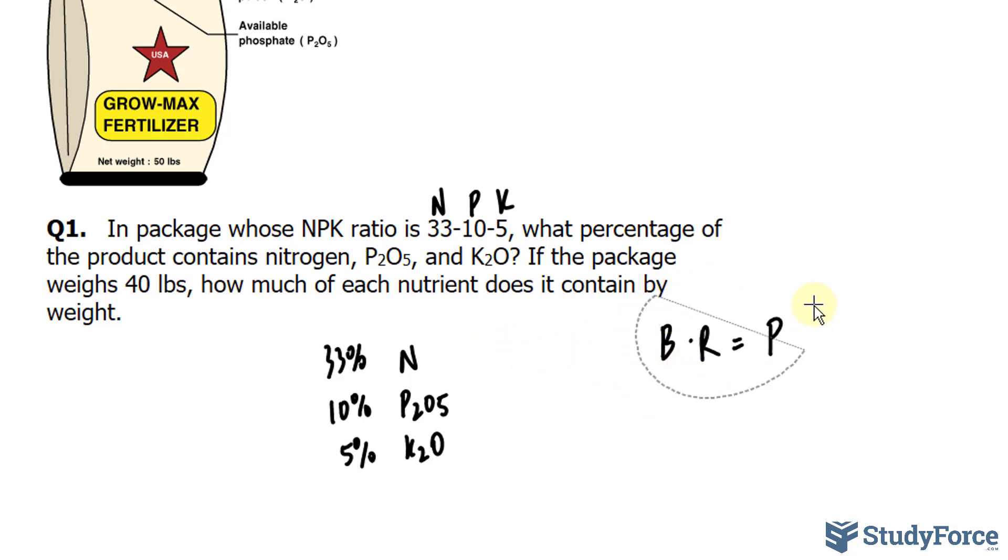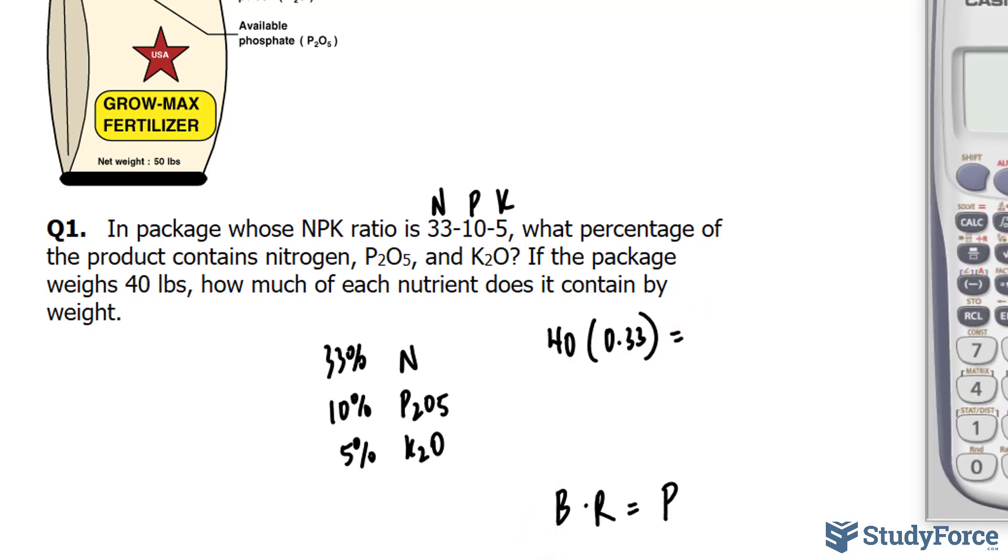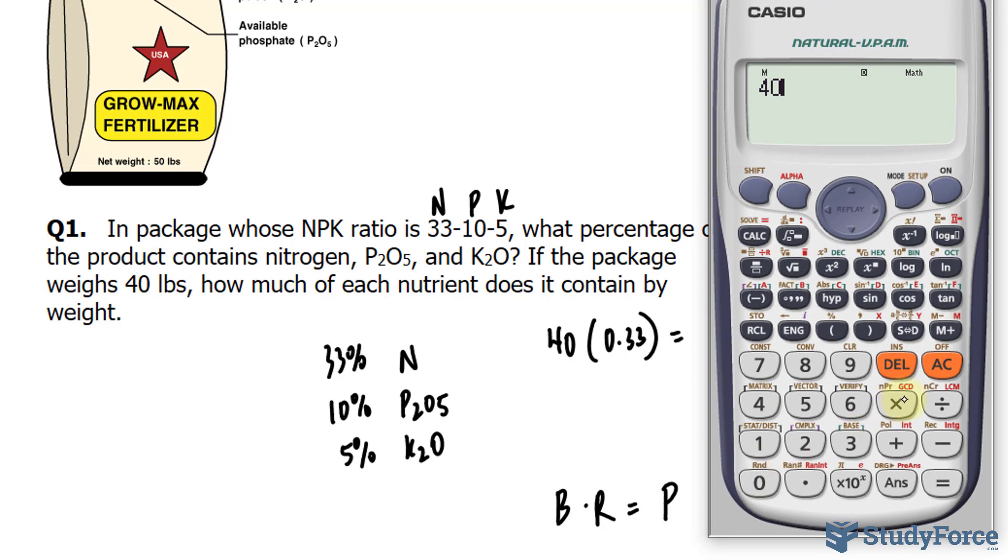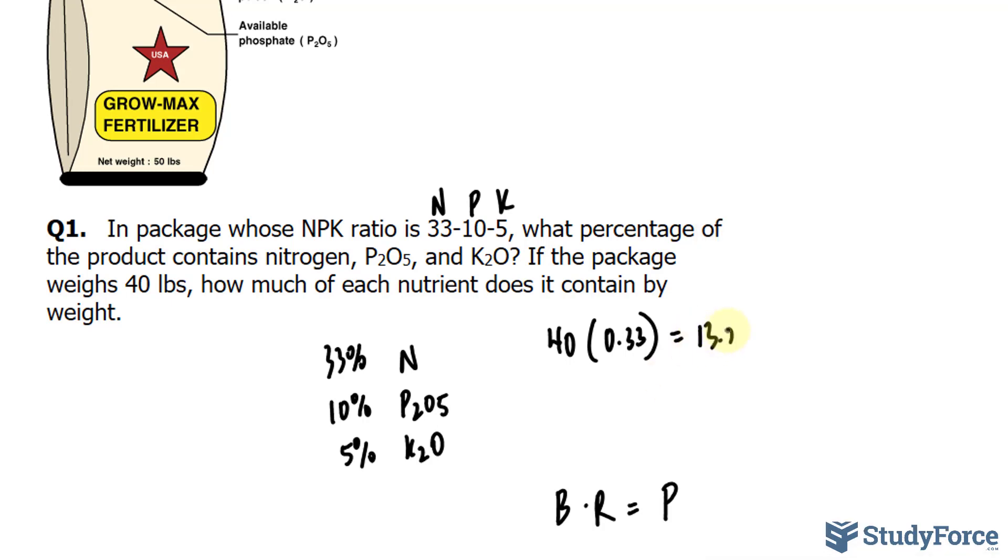So if we want to find out how much nitrogen by weight is found in this fertilizer, we'll take a base value of 40 pounds, multiply it to the decimal version of that percentage, which is 0.33. Simply take that number and divide it by 100%, and you end up getting the decimal. And by multiplying these two, we get the portion of nitrogen by weight. So let's use our calculator. Here, 40 times 0.33 makes 13.2 pounds of this product is elemental nitrogen.